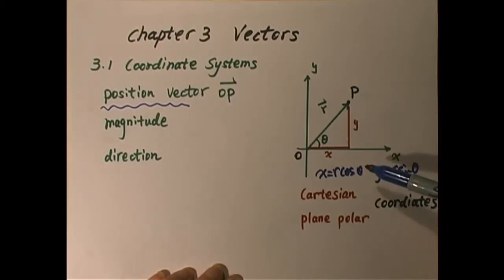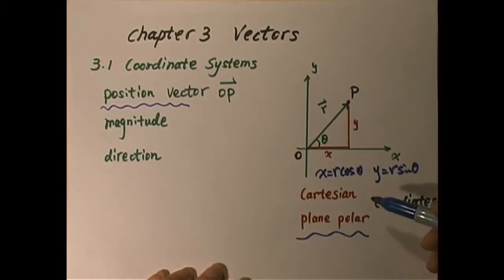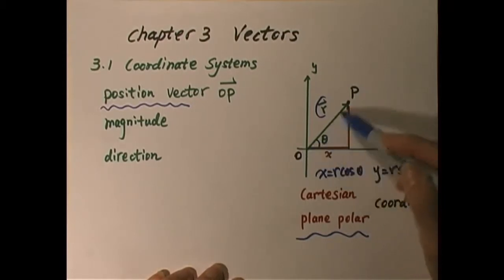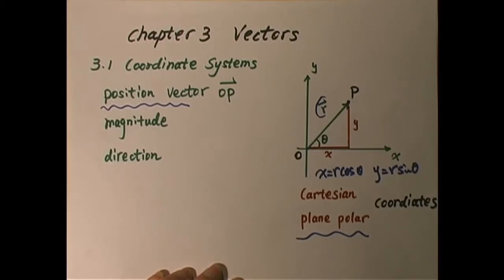We can use another coordinate, which is called plane polar coordinates. The plane polar coordinates is also two-dimensional and has two variables: one is distance — that is how far away a point is from the origin — and the other is the angle that this position vector makes with respect to the positive x-axis. So the plane polar coordinates has two variables, r and θ. The Cartesian coordinates has two variables, x and y, and the relationship between them is: x = r·cosine(θ), y = r·sine(θ). This is very, very useful and we will use it very often in the future.